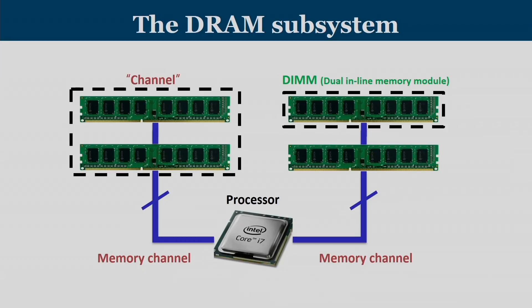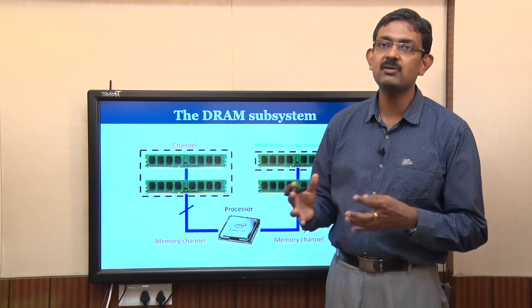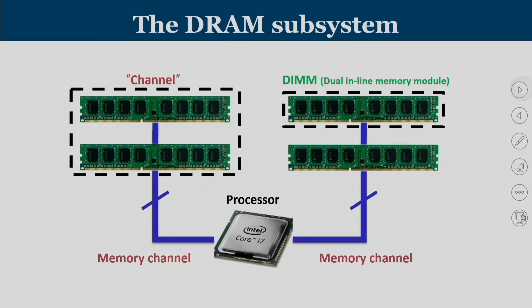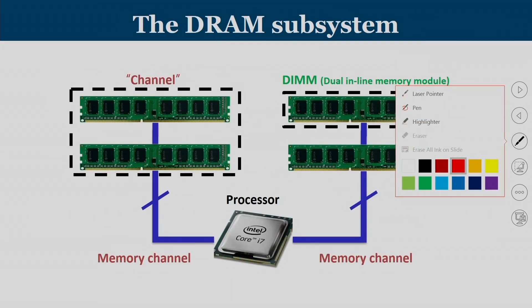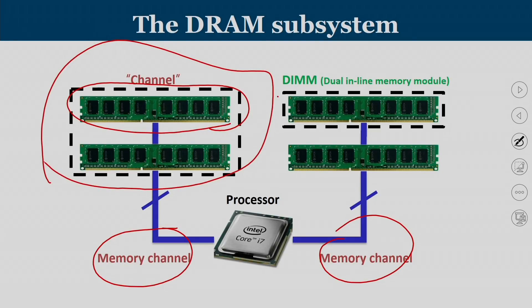When you have a processor, it may have multiple channels — multiple controllers and multiple address or data buses. If a processor has n sets of buses, it typically has n channels. Each channel consists of multiple DIMMs. A DIMM has a front side and a back side. The front side is known as rank 0 and the back side is known as rank 1.